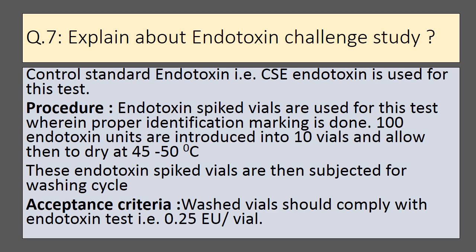The next important question is: explain the endotoxin challenge study done for the vial washing machine. Control standard endotoxin (CSE) is used for this test. In the procedure, endotoxin-spiked vials are used wherein proper identification marking is done prior to washing. 100 endotoxin units are introduced into 10 vials, and these vials are allowed to dry at 45 to 50°C. These endotoxin-spiked vials are then subjected to the washing cycle. Acceptance criteria: after washing, vials should comply with the endotoxin test limit of 0.25 EU per vial.